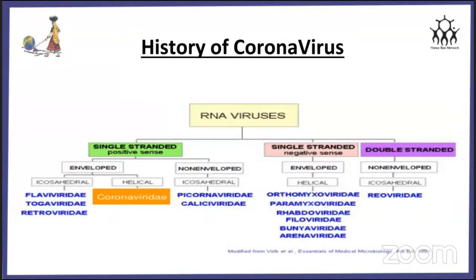History of coronavirus. Coronavirus is an RNA virus that is single-stranded and positive-sense. It is enveloped, as was presented in the previous Saturday's presentations. It is helical in shape and is from the family Coronaviridae.